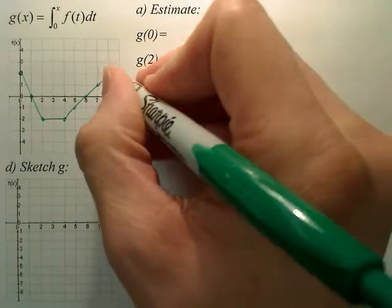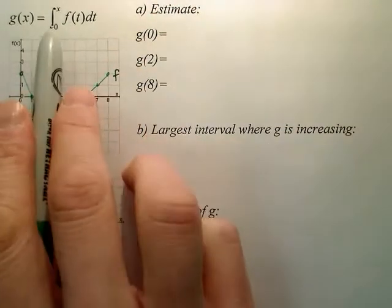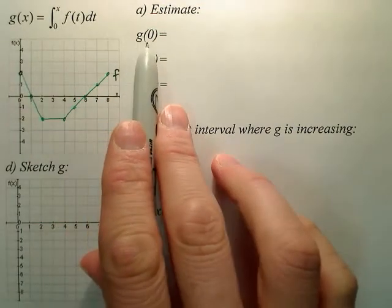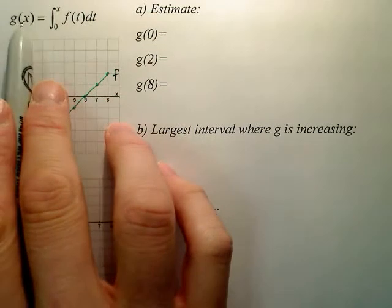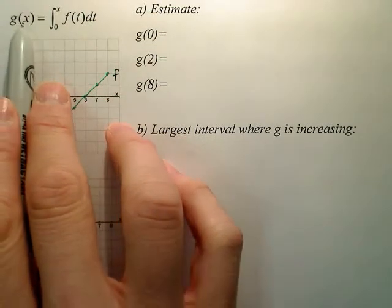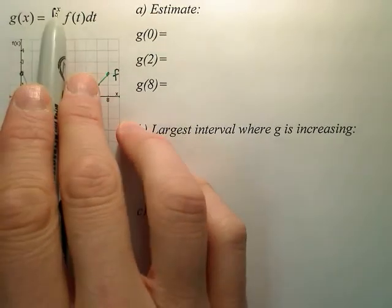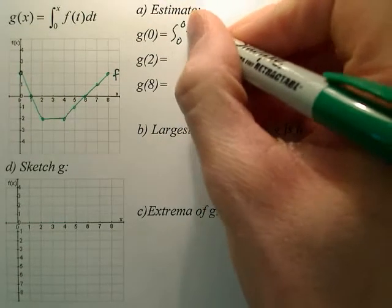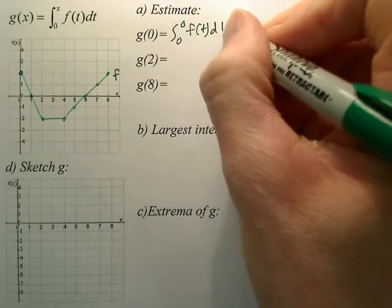Alright, this graph right here is f. The integral of f is equal to g. So if I want to find g of 0, that basically means that 0 is x. So I'm going to plug 0 right there, and I'm going to have the integral from 0 to 0 of f of t dt.